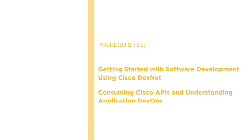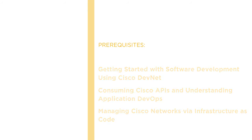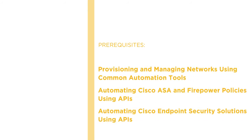Before beginning this course, I'd recommend the following prerequisite courses. These first three courses provide the foundation of software development and programmability skills that are extended in this course. The content around Cisco product APIs will be especially helpful. I'm assuming you already have a strong background in Python programming. These last three courses provide useful context and Python examples in both enterprise and security environments, which builds a strong foundation for this course.